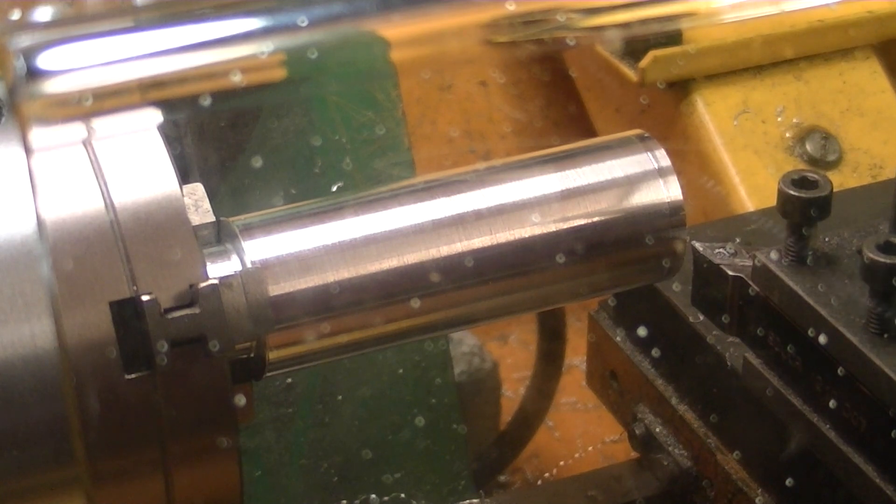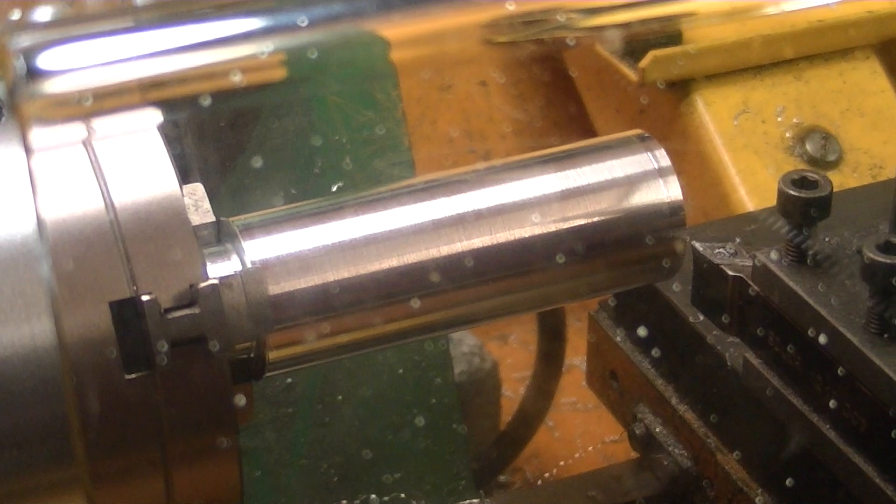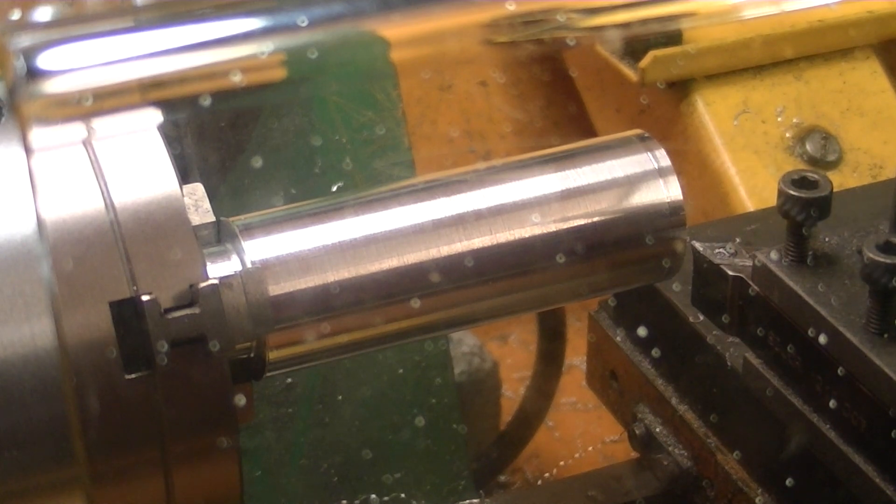The part, the aluminum, is already chucked up. The first operation is a facing cut, then it goes on to do some longer turning cuts, an outside radius, a taper, some internal radiuses, and then finally a thread.